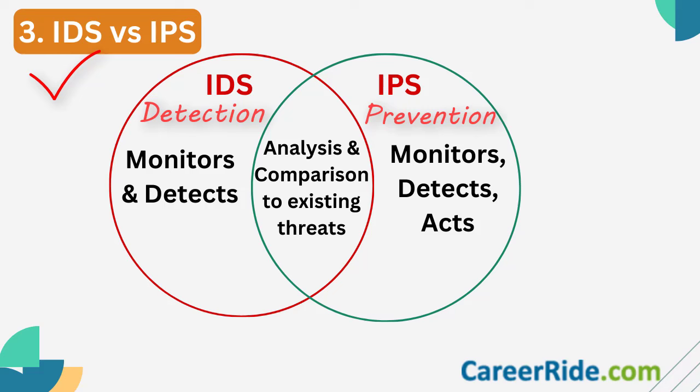An IDS, that is intrusion detection system, detects and monitors the intrusion but it doesn't take action on its own. It would generate alerts, but to take action, it relies on a human being or an automated system that can analyze the results and decide whether action should be taken or not. An IPS, intrusion prevention system, has the capability to decide whether certain packets of data should be accepted or blocked based on the rules that have been set.